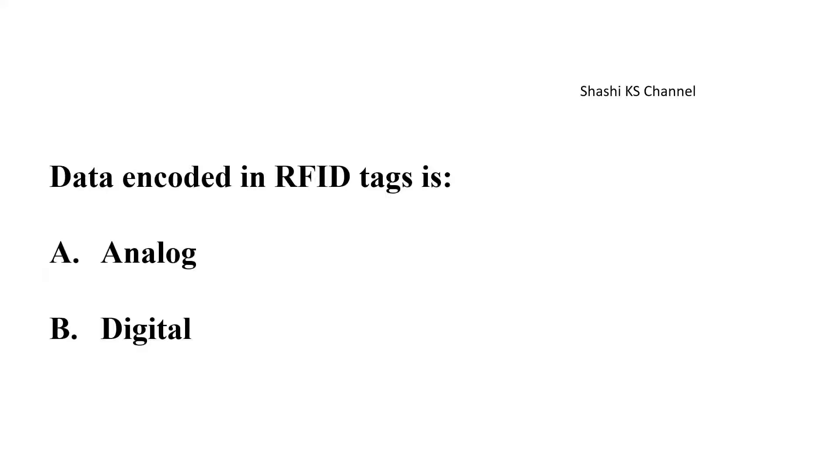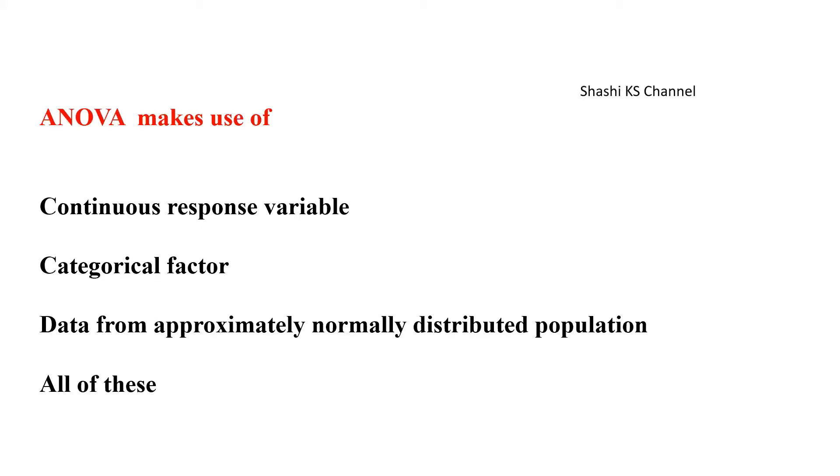The next question is data which is encoded in RFID tags is dash. Is it analog or digital? The right answer to this is digital. This ANOVA makes use of dash. Continuous response variable, categorical factor, data from approximately normally distributed population, all of this. The right answer to this is all of these.